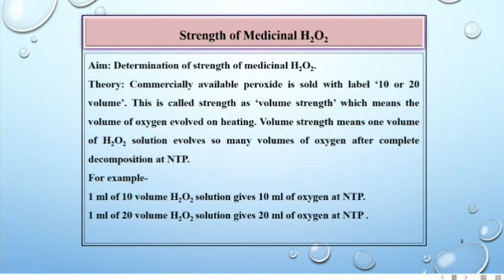Commercially available peroxide is sold with label 10 or 20 volume. This is called strength as volume strength, which means the volume of oxygen evolved on heating. Volume strength means one volume of H2O2 solution evolves so many volumes of oxygen after complete decomposition at NTP. For example, 1 ml of 10 volume H2O2 solution gives 10 ml of oxygen at NTP. 1 ml of 20 volume H2O2 solution gives 20 ml of oxygen at NTP.